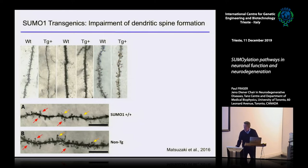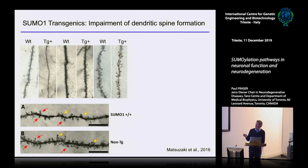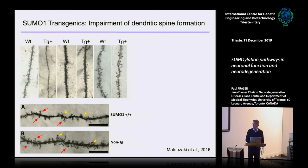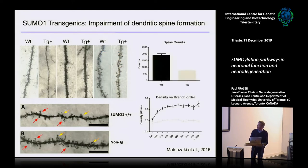We looked at the consequences in the overexpressing mice. The first thing noticed was that dendritic spine density was severely reduced in transgenes compared to wild type. These are from pyramidal cortical and hippocampal neurons. Not only the number changed, but the morphology — particularly the longer spines — seem to be reduced more specifically. The quantification shows it's down to about 30% of the wild type.